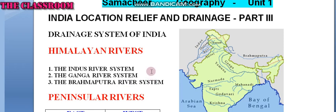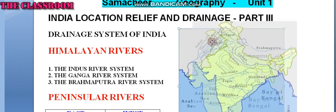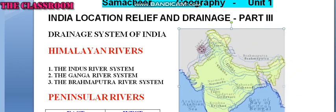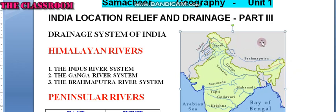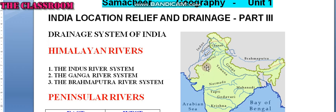The Himalayan rivers include the Indus river system, the Ganga river system, and the Brahmaputra river system. The Indus river is one of the largest rivers of the world; it ends at the Arabian Sea.